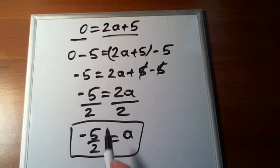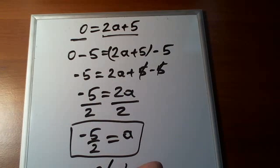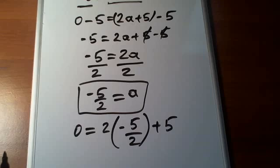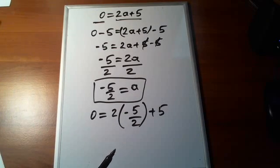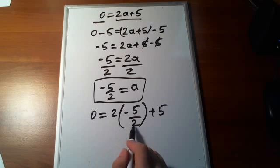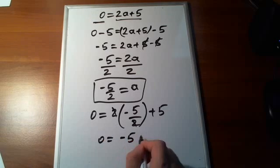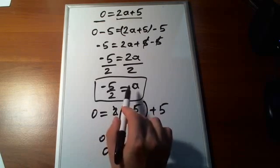We can still plug this fraction in to verify. 0 has to equal 2 times negative 5 over 2 plus 5. The 2s cancel, leaving us minus 5 plus 5, which is 0. It has to be equal to 0 — we're good. So this is indeed our solution.